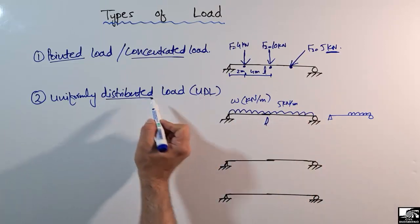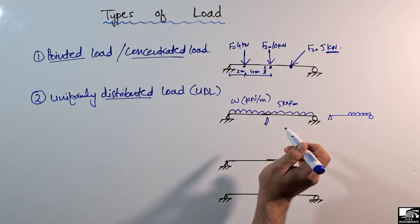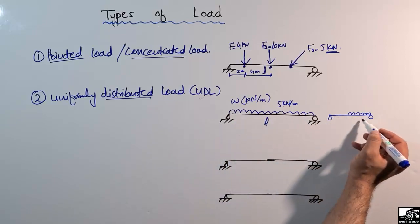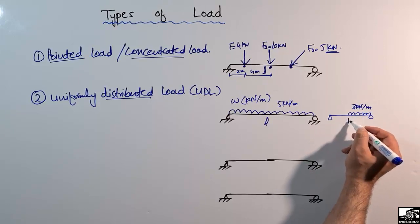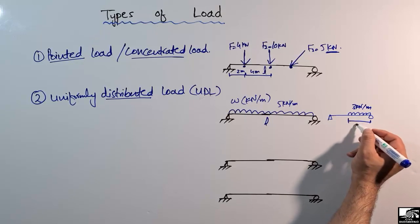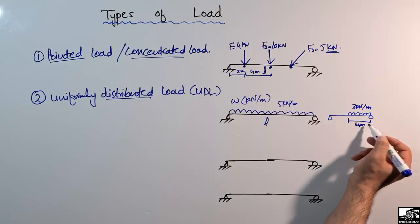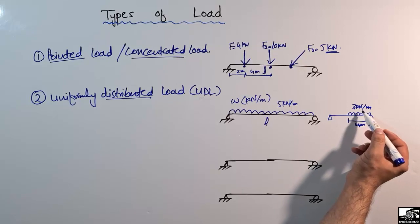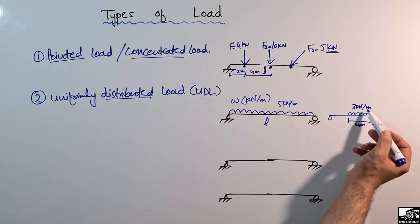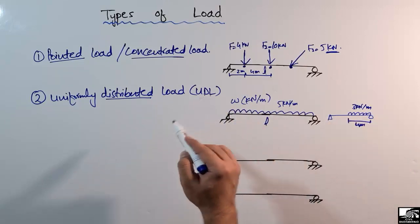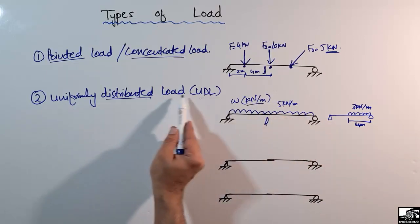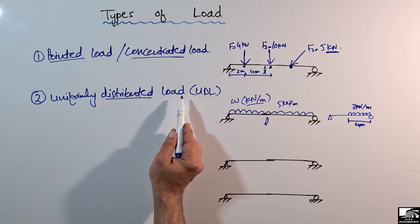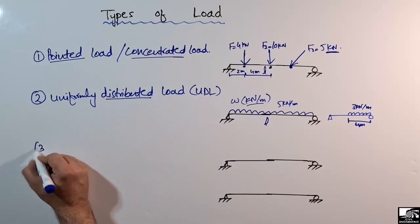For example, if the load is 3 kilonewton per meter distributed over a length of 4 meters along the beam, this load is always distributed and its unit will always be kilonewton per meter. This is the second type of load, which is most commonly used in civil engineering structure design.